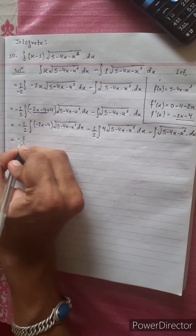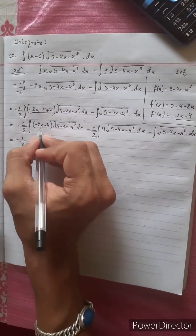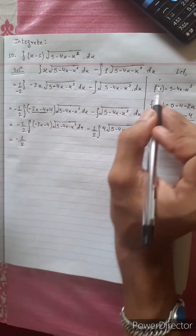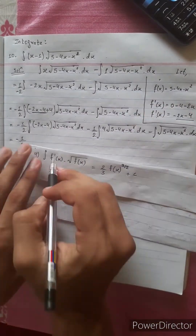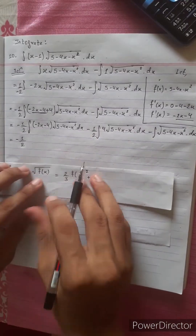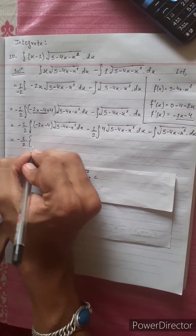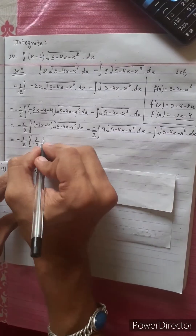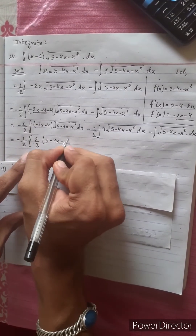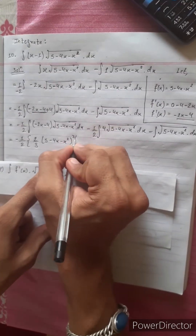So we get minus 1/2. The formula involves 2x - 4, under root of x. Applying the power rule: (2/3) times f(x), which is (5 - 4x - x²) to the power 3/2.